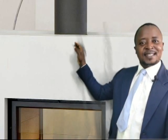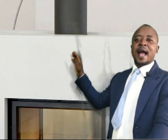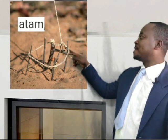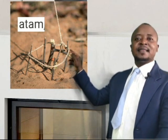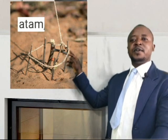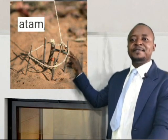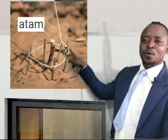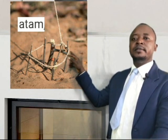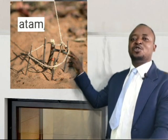Then we move forward to another word still under the letter A, which is ATAM. As you can see right here on the board, we have ATAM. ATAM is a trap, like the hunters use in the forest to catch animals. ATAM is used for hunting — in English, it is called the trap.